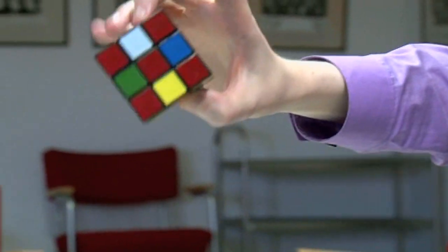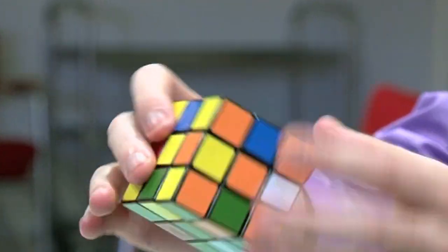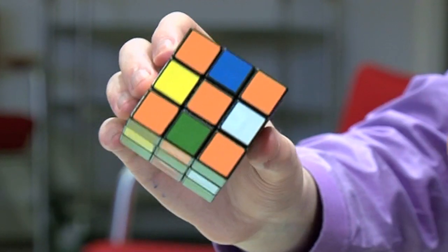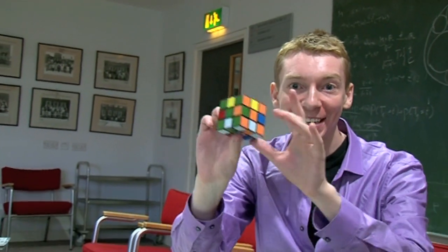So there are 20 moves there, and this will superflip the cube. From the solved state, you get this really pretty combination there. And this is the furthest away from being solved that you can get.